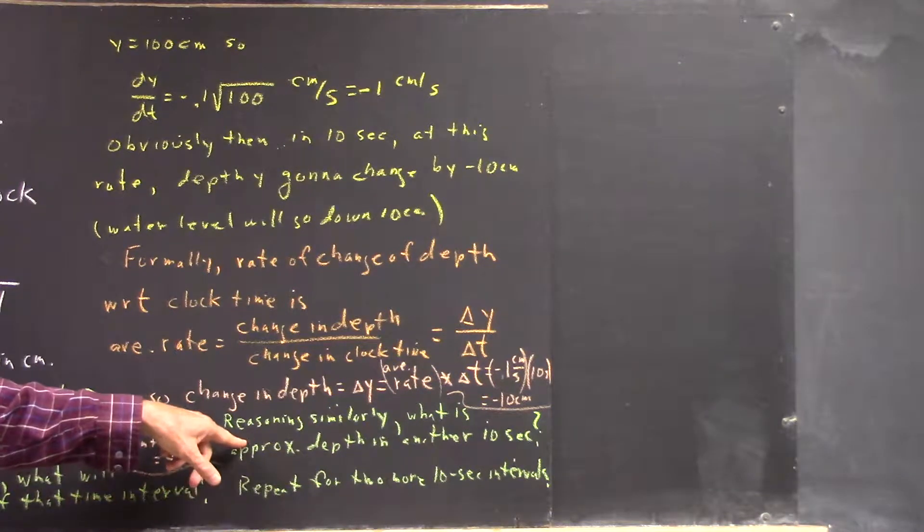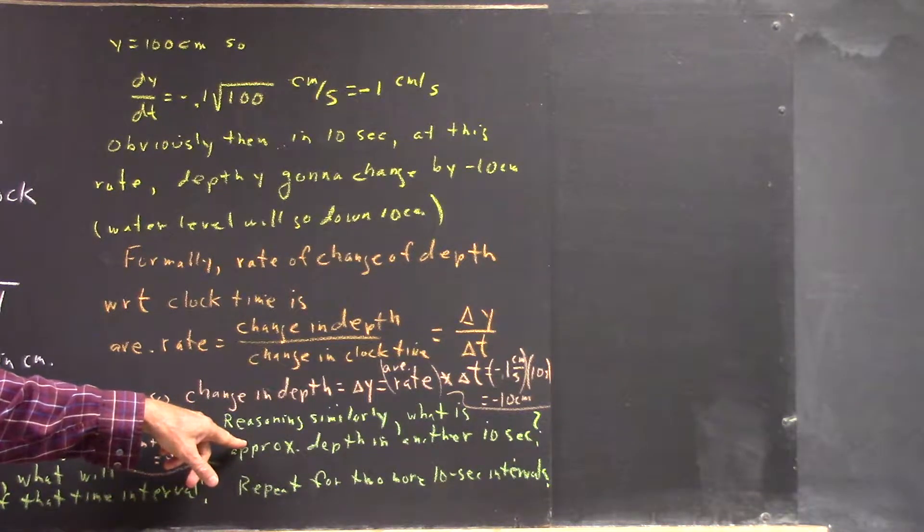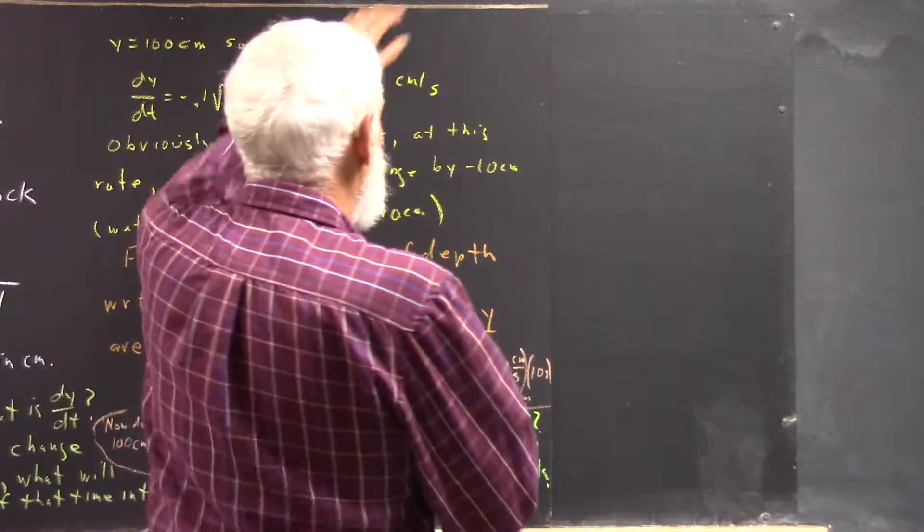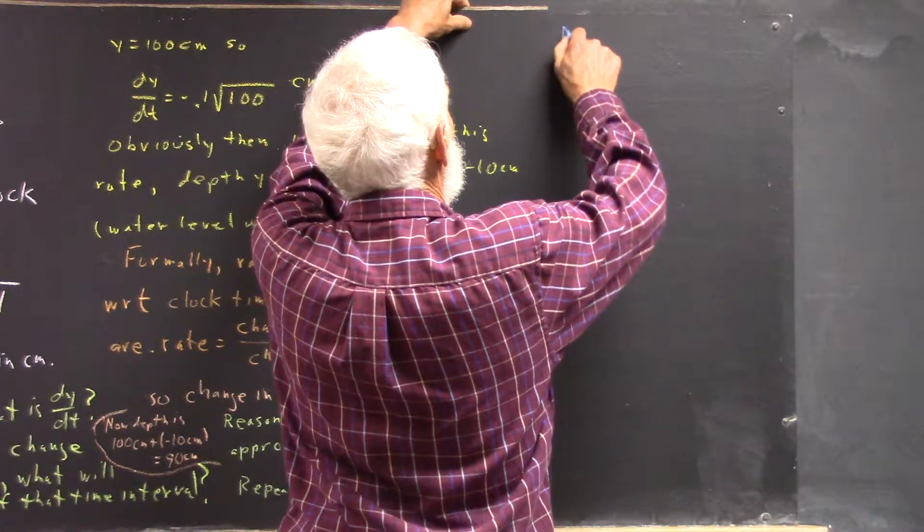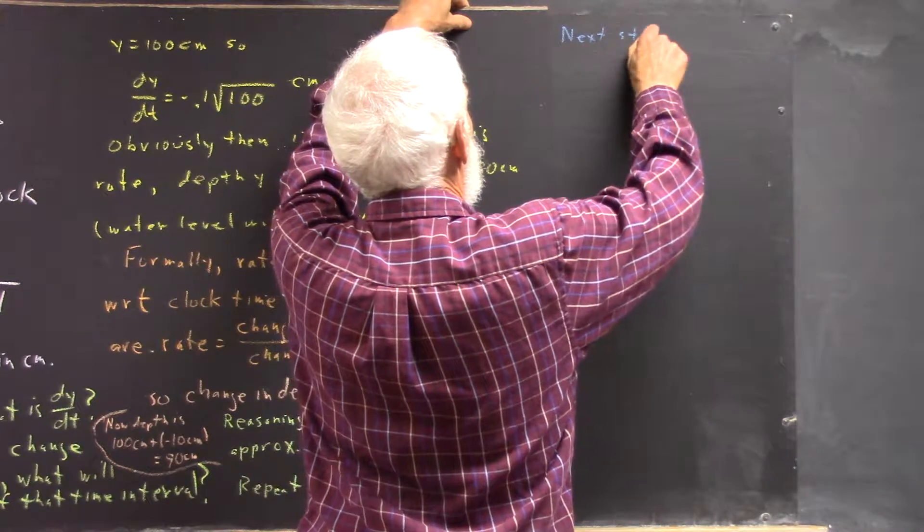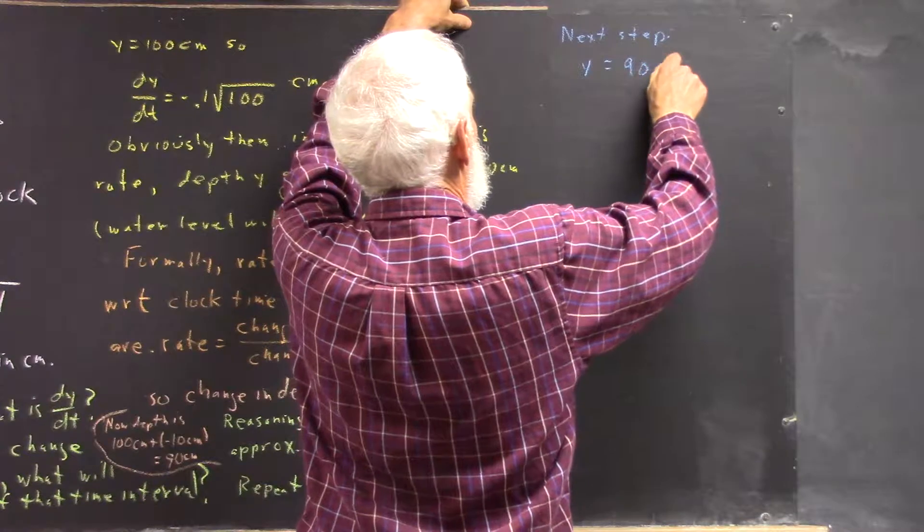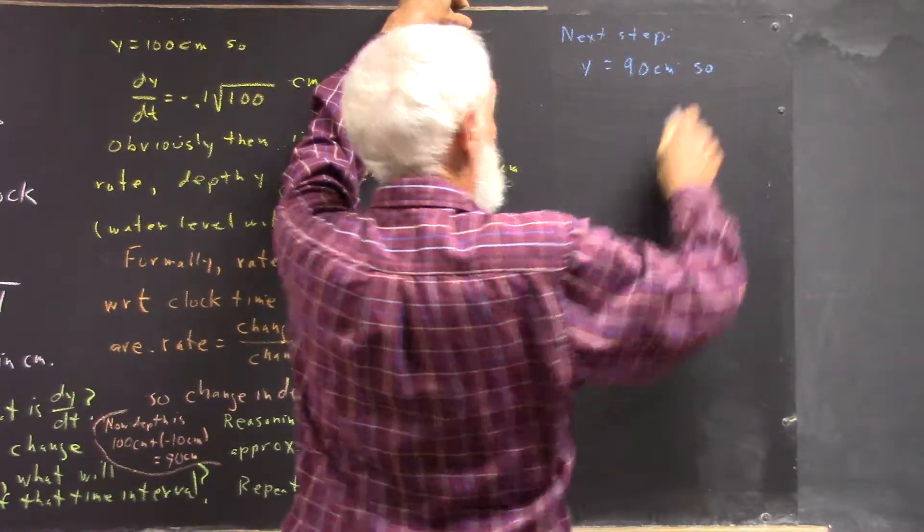Okay, now when we reason similarly, that means we start with the new state of the system where the depth is 90 centimeters. Okay, so, the next step, Y is 90 centimeters.